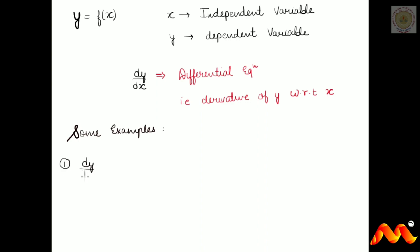For better understanding, let's look at some examples. First: dy/dx = x + sin(x). Here Y is a function of X, where Y is the dependent variable and X is the independent variable. dy/dx represents the derivative of Y with respect to X. Second example: d⁴x/dt⁴ + d²x/dt² + (dx/dt)⁵ = e^t.